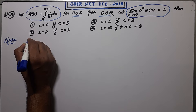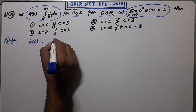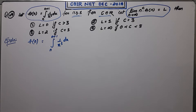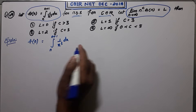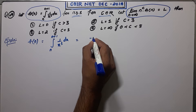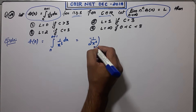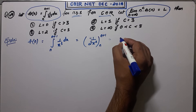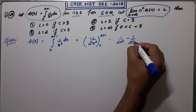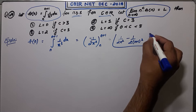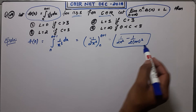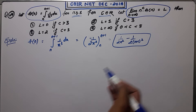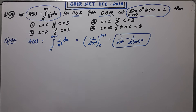First, write down the integral properly. Your integral is the integration of 1/x³ from n to n+1. Integrating gives minus 1 over 2x², with limits from n to n+1. So a_n equals 1/(2n²) minus 1/(2(n+1)²).